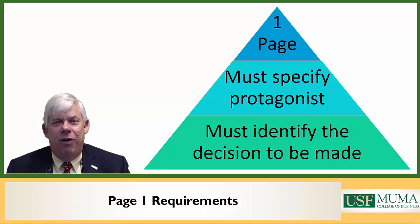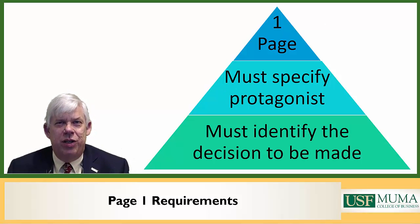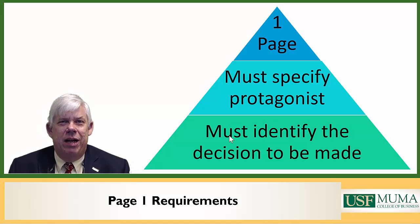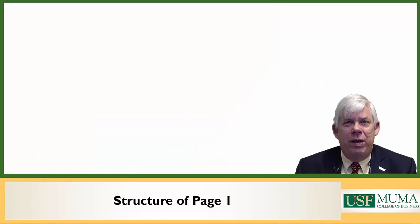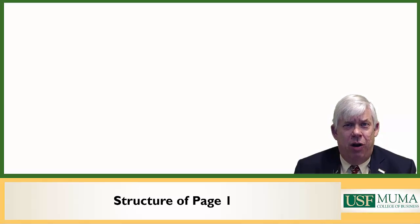Just to review: whenever you create page one, you have to keep it at one page, you have to identify who the decision maker is — this should be an individual — and you must identify the decision that needs to be made. When you develop a case for the MUMA Case Review, it's nearly always going to have the same basic structure, and there are five elements to this structure, two of which are optional but encouraged.